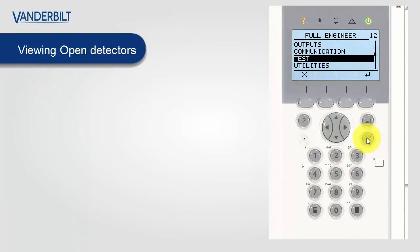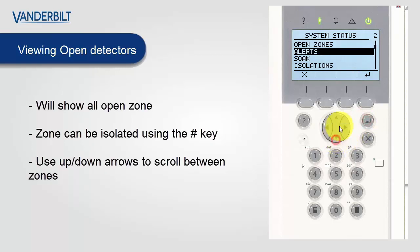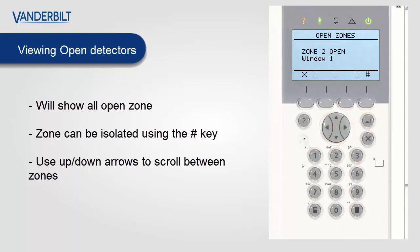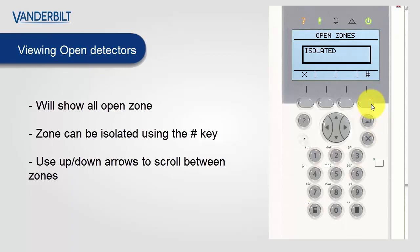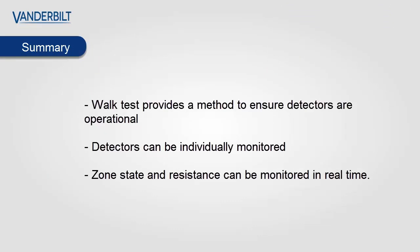Finally let's look at how to monitor for any open zones on the system. We can do this from soft or full engineer — we select system status and select open zones. This will show all open zones in the system and zones can be isolated by pushing the hash key. In summary, walk test provides a method to ensure detectors are operational. Detectors on the system can be individually monitored and zone state and resistance can be monitored in real time. We hope this helps you with your installation of SPC systems and can improve system quality and performance for end customers. Thank you for watching and goodbye.